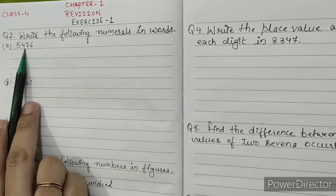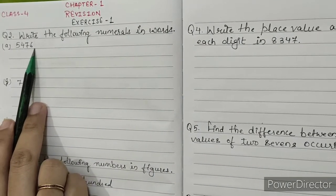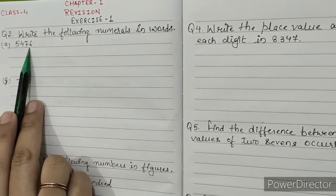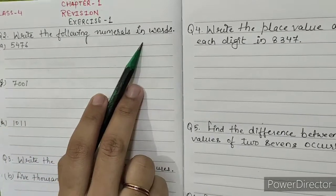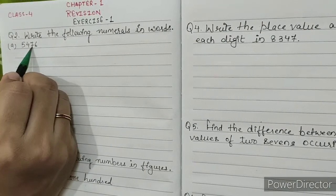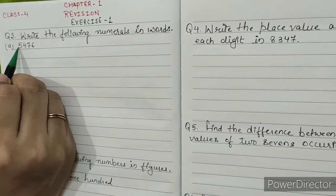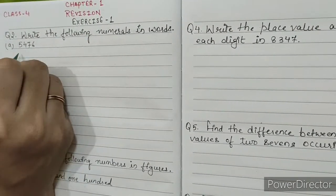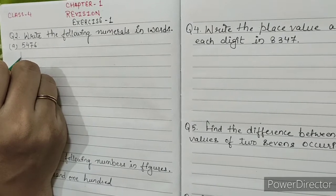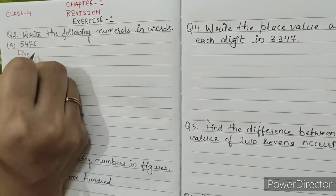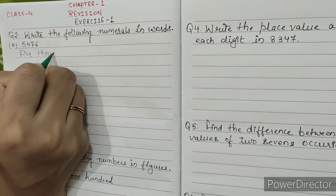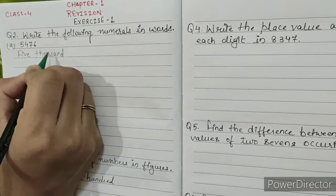A: 5, 4, 7, 6. We have to write these 4 digits in words. 1 stands for thousands place, so 5 is in thousands place. We will write FIVE THOUSAND — 5,000.